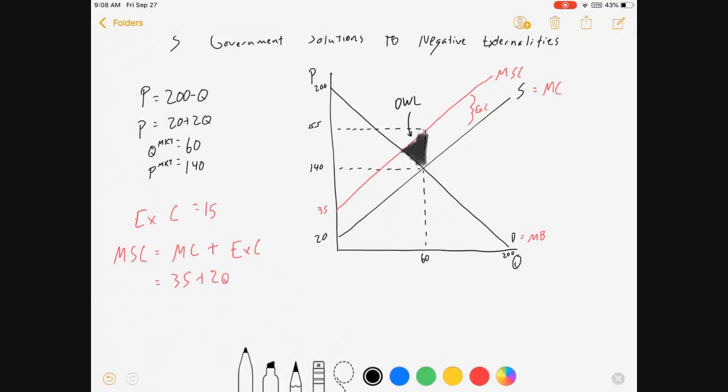So, what is the optimal quantity? Well, that's the one where the costs actually equal the benefits. So, we set our marginal social cost equal to our marginal benefit. And if we do that, we will get 55. Where did I get that from? I set 35 plus 2Q equal to 200 minus Q. Solve for Q, you get 55.